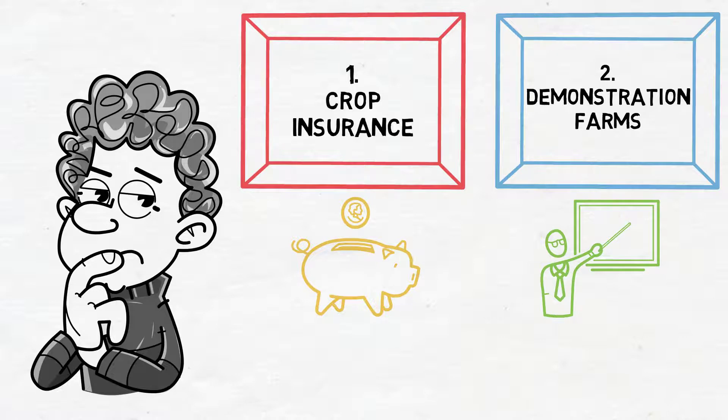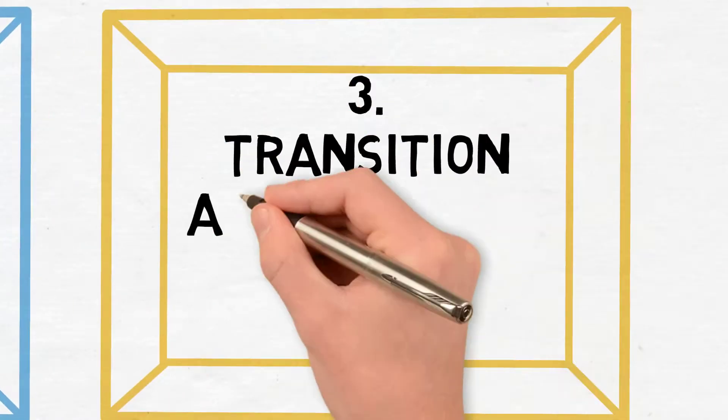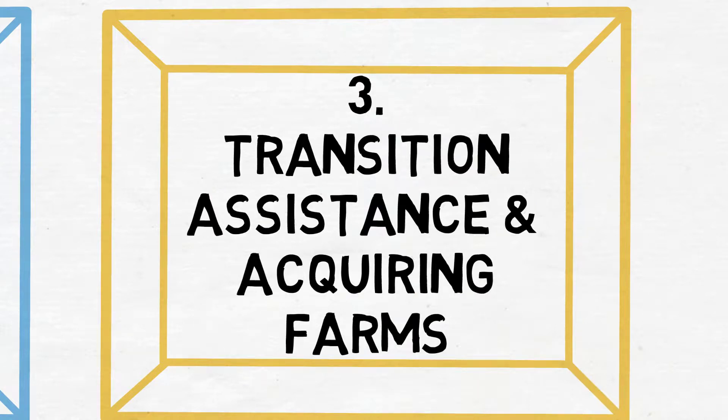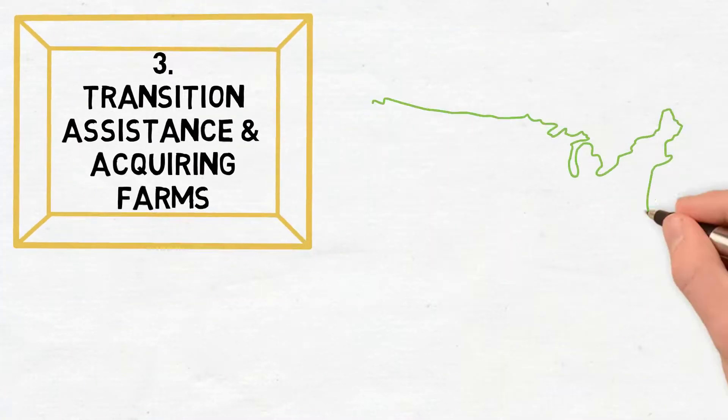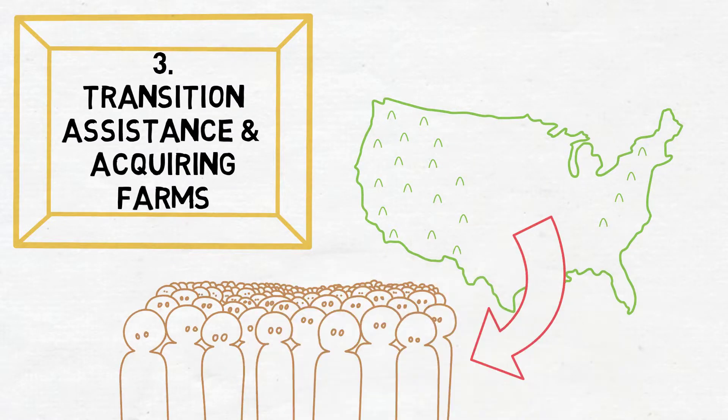But the third one is where I think there could be big opportunities, and that's in transition assistance and even sort of acquiring farms and leading them down this road of regenerative agriculture. There's an awful lot of farmland in the U.S., at least, that is leased out and farmed by people who don't actually own it.